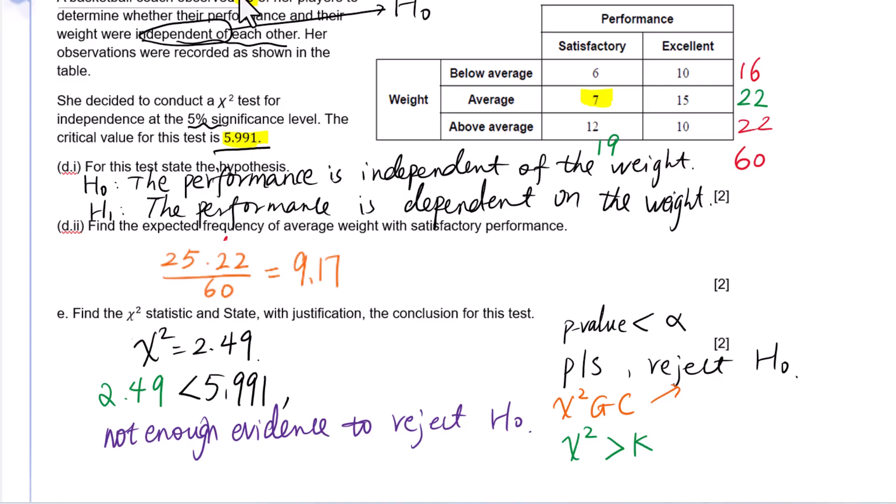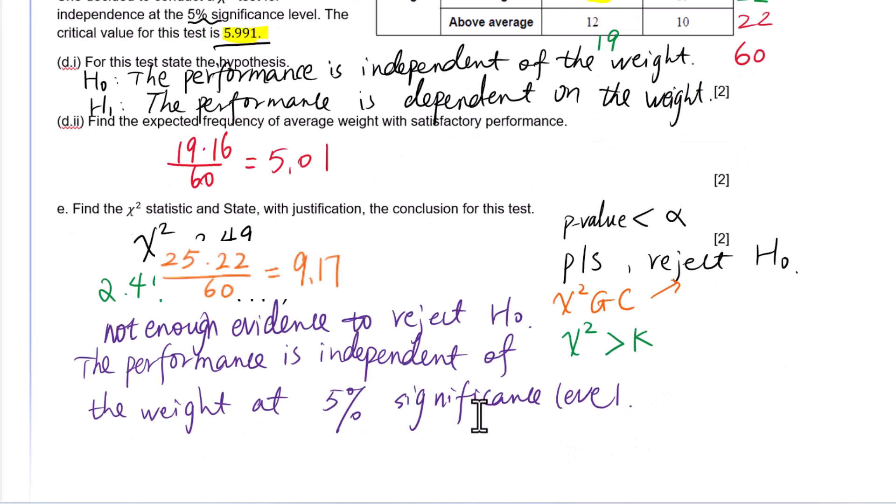We will write down H0 with significance level. The performance is independent of the weight at 5% significance level. Conclusion: the performance is independent of the weight at 5% significance level.